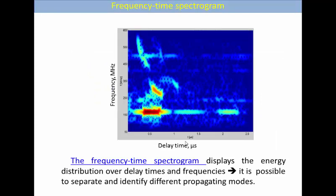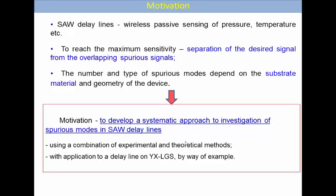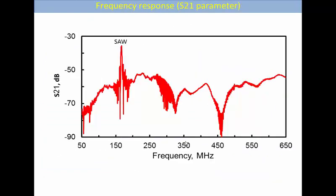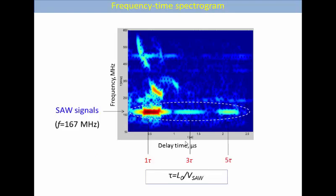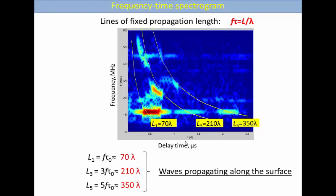This type of signal representation displays the energy distribution over delay times and frequencies, and therefore it is possible to separate and identify different propagating modes. On this spectrogram, for example, SAW signals propagate with a frequency 167 MHz and we see the main triple transit signals with delay time depending on SAW velocity. The waves propagating along the surface must satisfy certain relation between frequency and delay time, and their product must be equal to distance covered by the wave in wavelengths. So we can build the lines of fixed propagation length, and the spurious modes which do not belong to these lines propagate obliquely and we can identify them as bulk waves.